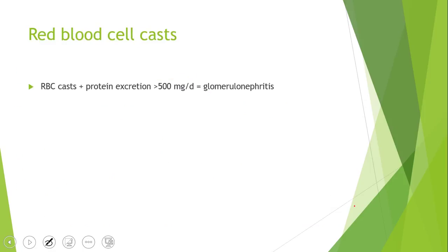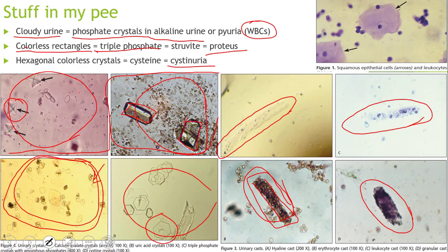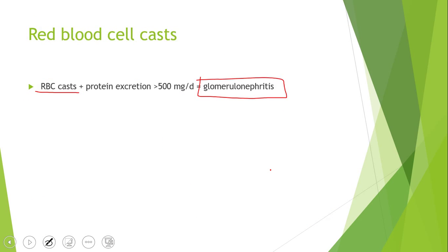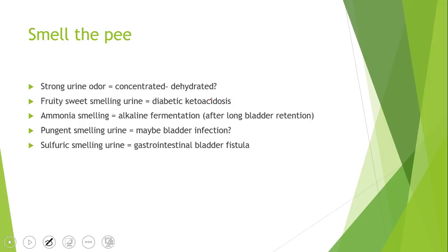Red blood cell casts are essentially pathognomonic for glomerulonephritis. If you see red blood cell casts along with protein excretion greater than 500 milligrams per day, the person has glomerulonephritis. Finally, you can even smell the urine — if it smells really strongly of urine, the person is probably dehydrated with very concentrated urine.